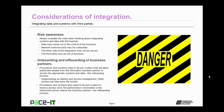The onboarding and offboarding of business partners is another consideration. Procedures and systems need to be put in place that will allow authorized people from the third-party business partner to access the appropriate systems and data within your network — this is the onboarding process. Implementing an Identity and Access Management system, or IAM system, can help ease the burden. Procedures and systems also need to be put in place to remove access once the partnership is terminated or the authorized person leaves the business partner — this is the offboarding process.